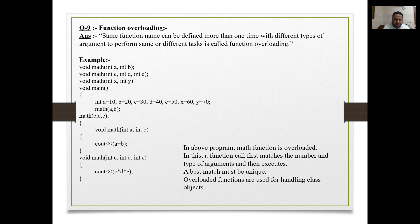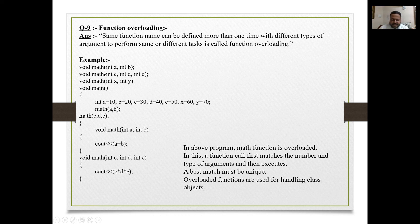Next is function overloading. The same function name can be defined more than once with different types or numbers of arguments, to perform the same or different tasks. The function name stays the same but you can use it for different types of tasks. For example, declaring void math three times with different argument lists.